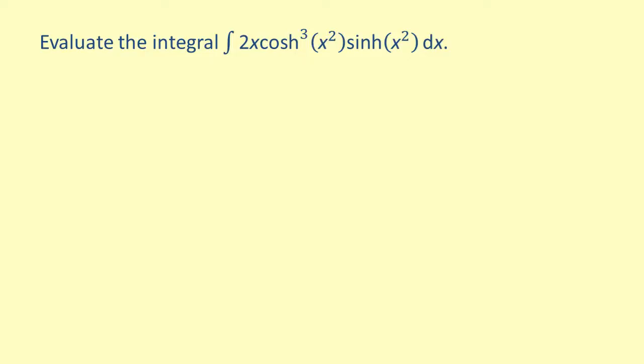First, notice that the hyperbolic cosine function is raised to a power, and we also have a hyperbolic sine function. This gives us a hint that we should use u substitution. So, let's decrease the power on the hyperbolic cosine by 1 and rewrite it as a product.